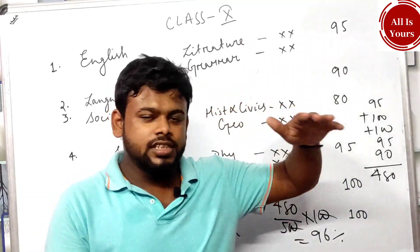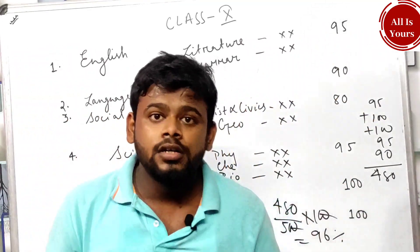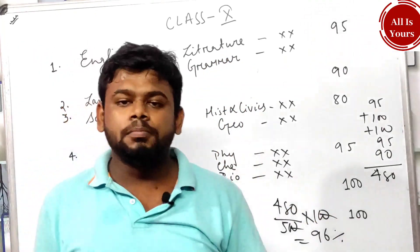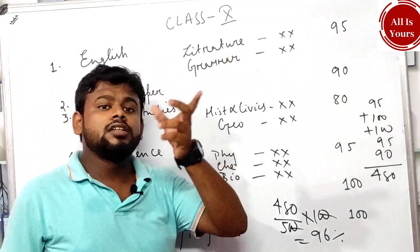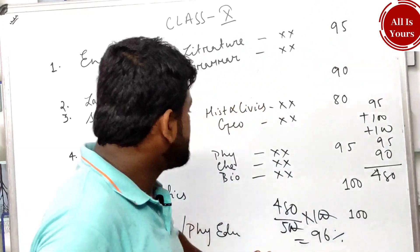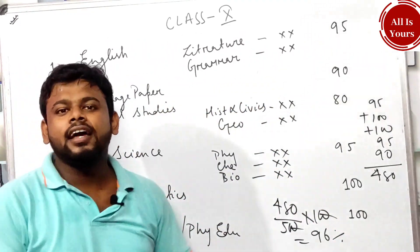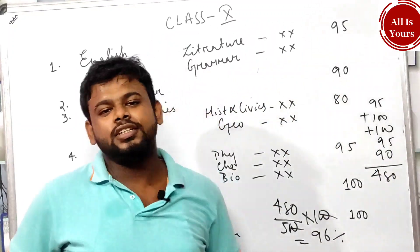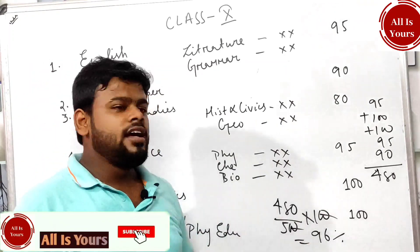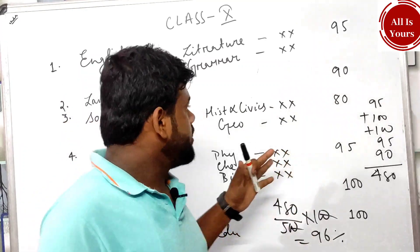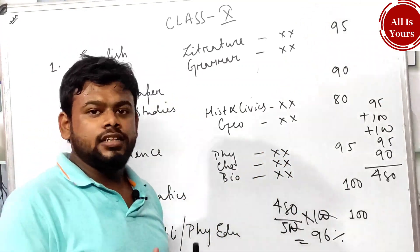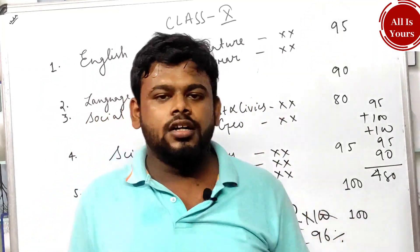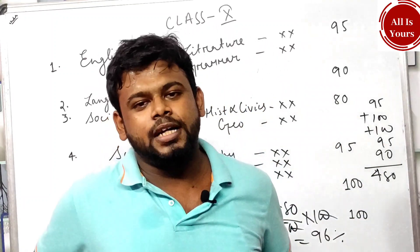To summarize: you have six subjects, take the top five highest marks, with English being mandatory. Calculate your percentage that way. After watching this video, whenever someone asks what percentage you secured, you can confidently answer. Thank you very much. I hope you loved this session. If it was helpful, do share it with your friends, relatives, and elder siblings nearby. Thank you very much, cheers!